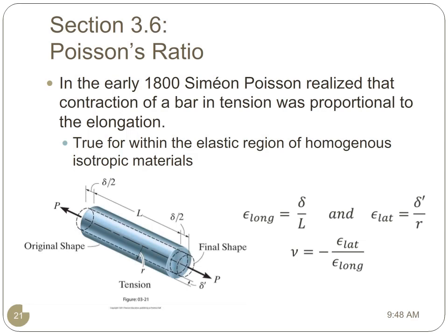In the early 1800s, Simon Poisson realized that the contraction of a bar in tension was proportional to its elongation. We find that this is true for the elastic region of homogeneous isotropic materials. We use this principle to define the Poisson's ratio, which is equal to the negative ratio of the lateral strain over the longitudinal strain. We can use this to find the lateral strain in a member subject to a load along its longitudinal axis.